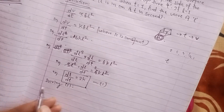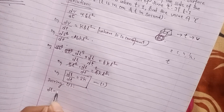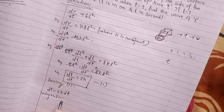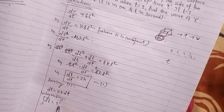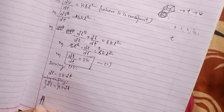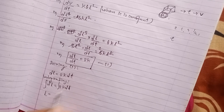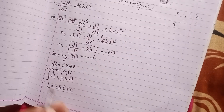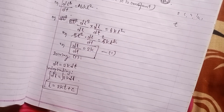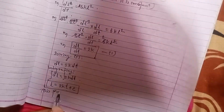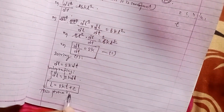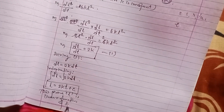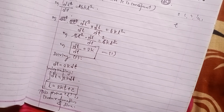Solving: dL equals 2k dt. Integrating both sides: L equals 2k times t plus C. This means L is a linear function of time.